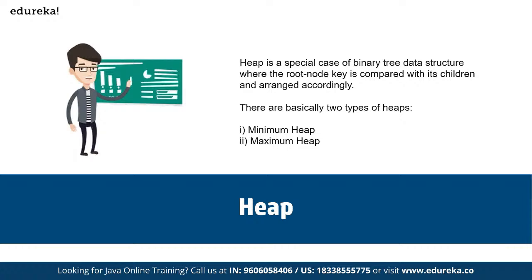We also have a heap, also referred to as a binary heap. A heap is a complete binary tree that satisfies the heap property. A tree is said to be complete if all levels except possibly the deepest are fully filled. In a minimum binary heap, for every node, the node's value is less than or equal to the values of its children. In a maximum binary heap, for every node, the node's value is greater than or equal to the values of its children.